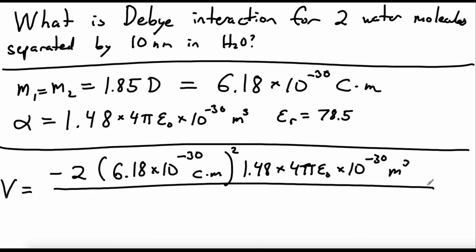On the bottom, we have 4 pi epsilon naught, the electric constant squared. And then we have the distance. So let's put that into SI units. So it was 10 to the negative 8 meters to the sixth.